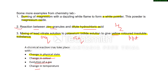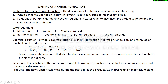Another indicator is a change in temperature. In the reaction between zinc granules and hydrochloric acid, the container in which the reaction takes place becomes hot, meaning some heat is evolved. In some reactions temperature may increase, and in others it may decrease, depending on the type of reaction.